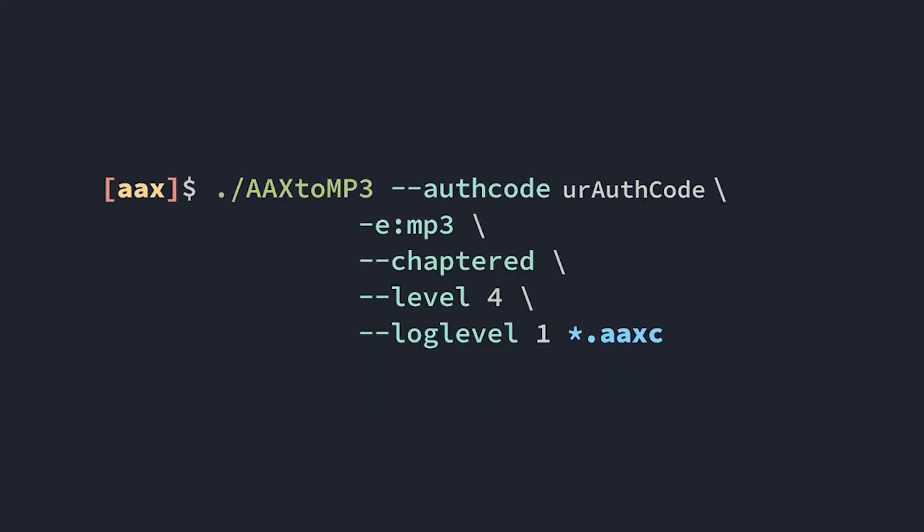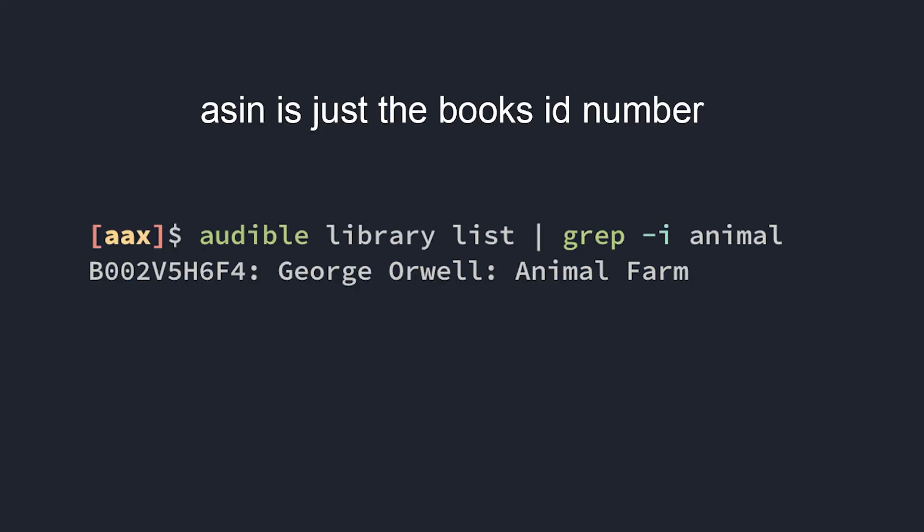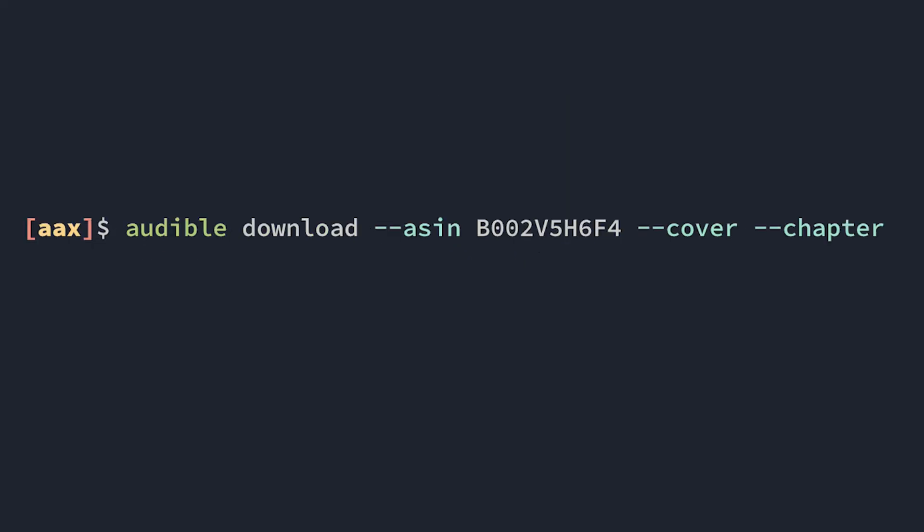If you have any .AAXC files, the process is exactly the same except you change the wildcard to ".AAXC". It may fail if you're missing a chapters.json or cover.json file. If that happens, find the ASIN of the audiobook with the following command, then run "audible download" with the "--chapter" and "--cover" flags, then run the script again.